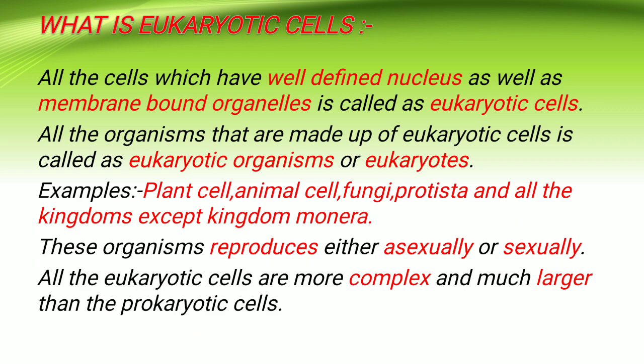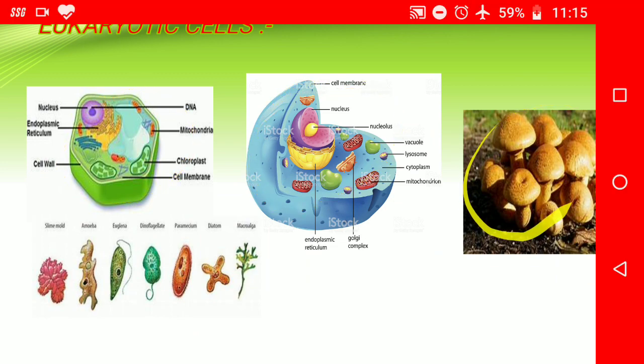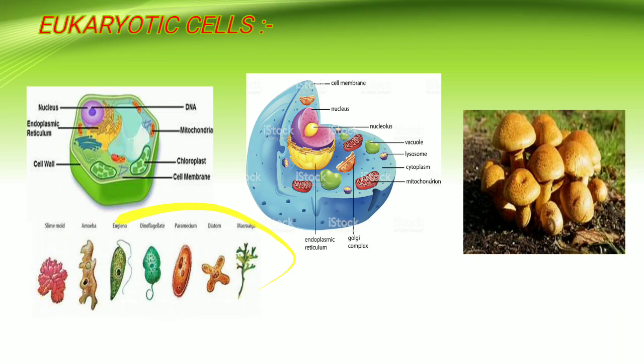Another interesting fact about eukaryotic cells is that eukaryotic cells are believed to have arisen from prokaryotic cells. Eukaryotic cells can be multicellular as well as unicellular. Plant cells and animal cells are examples of multicellular eukaryotes, while kingdom Fungi and kingdom Protista are the best examples of unicellular eukaryotes.